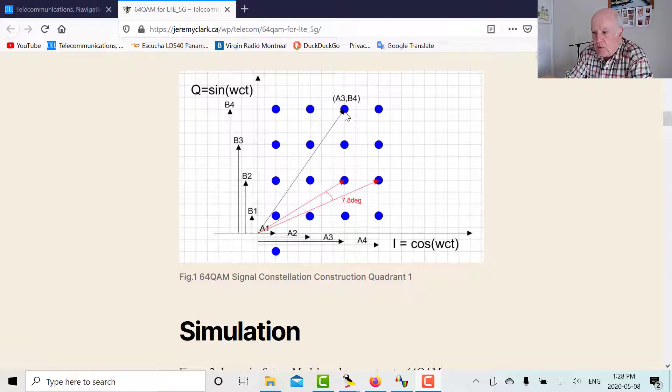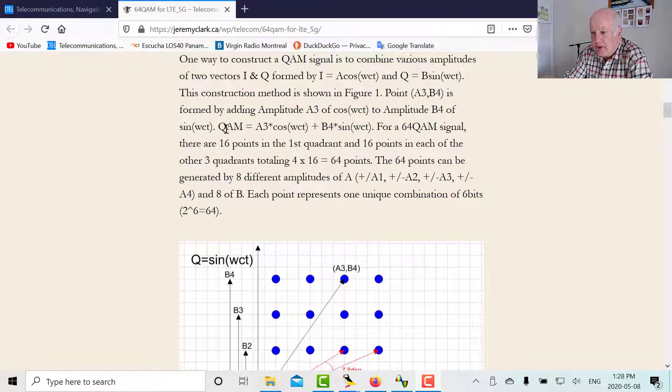So for instance, let's say this point here, this point represents 6 bits, but we can construct it with a vector of A3, this amplitude A3 times cosine omega CT, and this amplitude B4 times sine omega CT. So here would be the equation, our QAM will be the amplitude along the I axis times cosine omega CT, which in this case is A3, plus the amplitude along the quadrature axis, which would be B4 times sine omega CT.